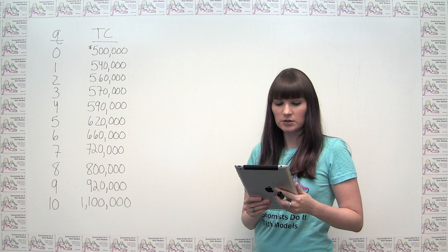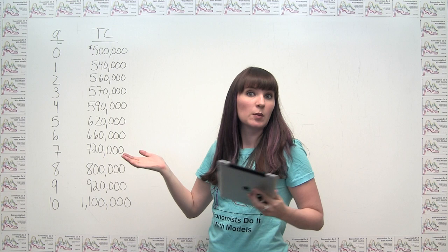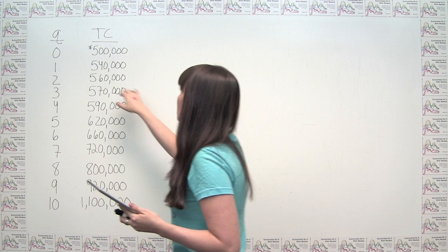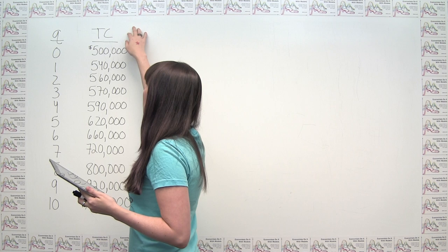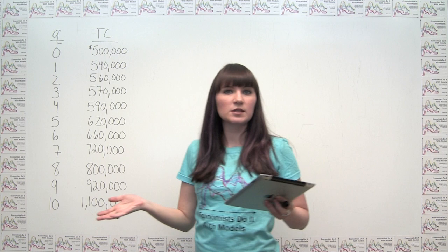The problem says the accompanying table shows a car manufacturer's total cost of producing cars, and then we're given these numbers here. I originally read this as the total cost of producing cats, and I guess these would be sort of expensive numbers for producing cats, but I still kind of like my way better. Anyway, cars here. I used a small Q to denote the quantity of cars produced by one individual company, not the whole market, and TC represents total cost.